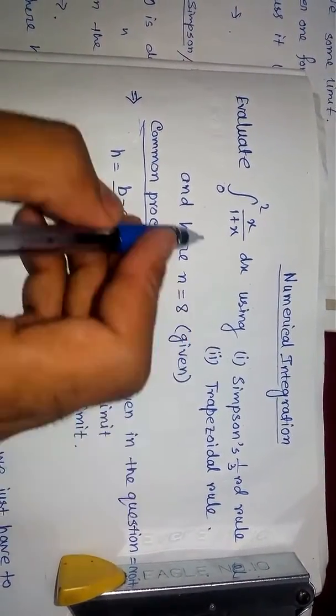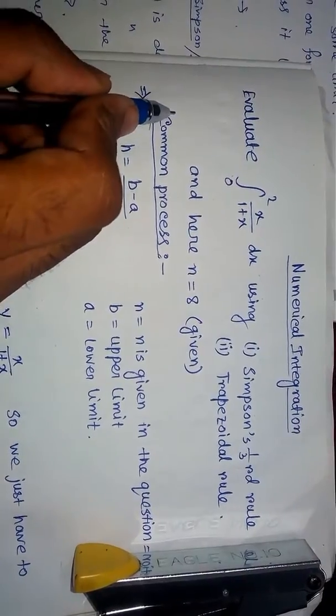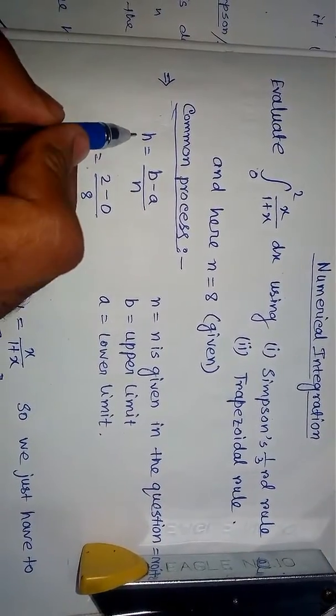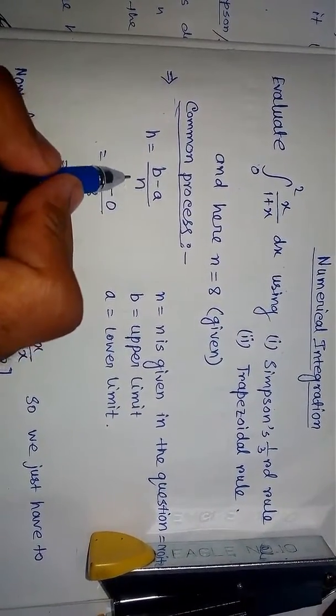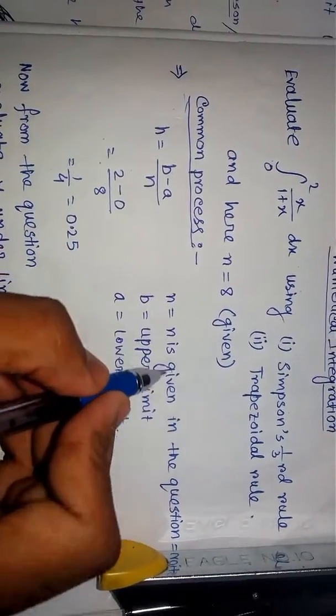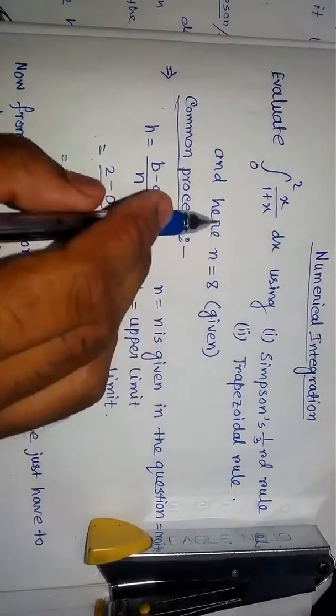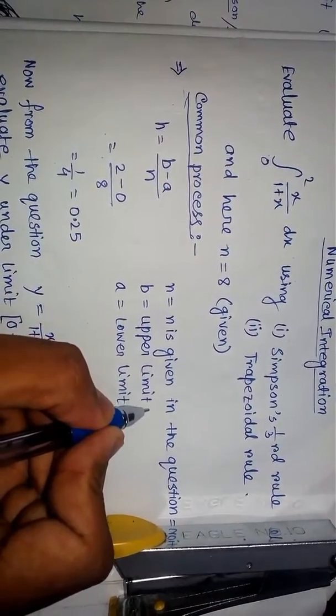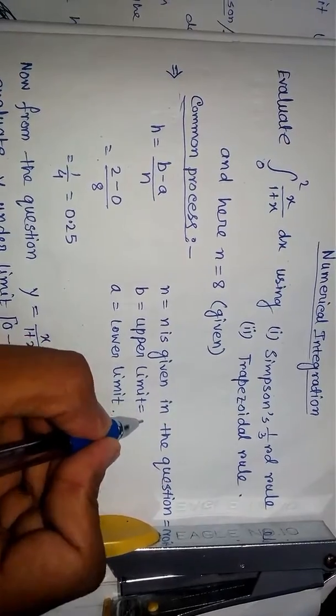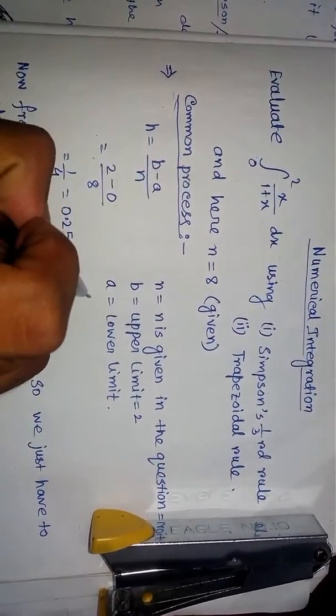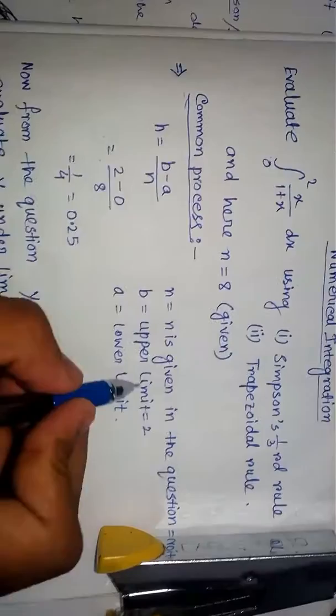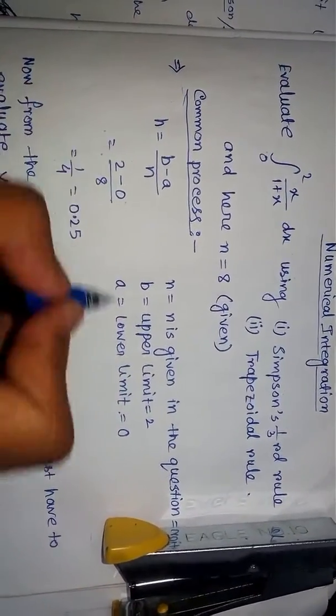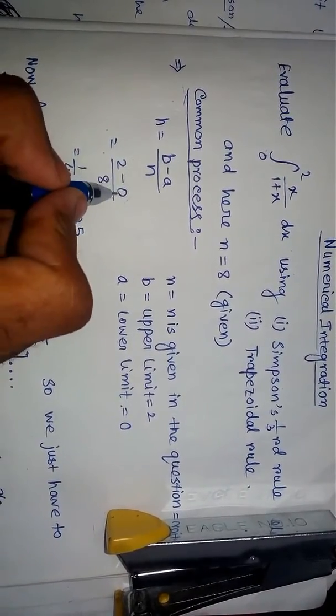For solving these two types of questions, we have to do a common part, a common process. We have to calculate h. h equals (b-a)/n - that is the formula. What is n? n is given in the question, that is 8. What is b? b is the upper limit, that is 2. And what is a? a is the lower limit, so the value of a is 0.